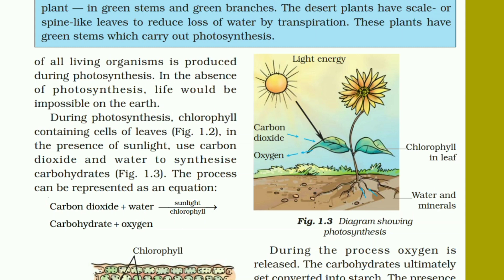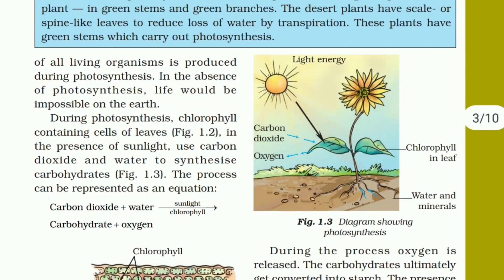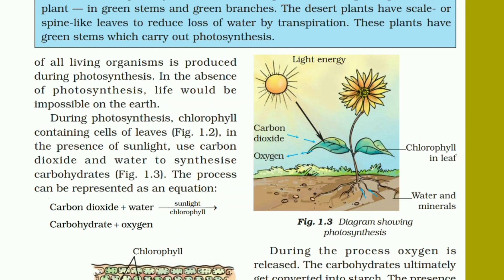These desert plants, like cactus, have green stems which carry out photosynthesis. Leaves are not the only part of the plant where food is prepared. Any green part of the plant where chlorophyll is present can carry out photosynthesis.